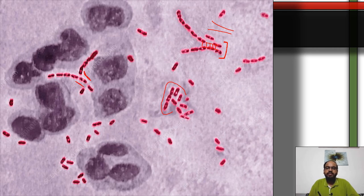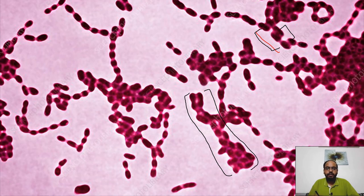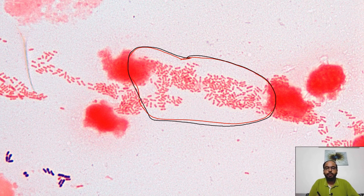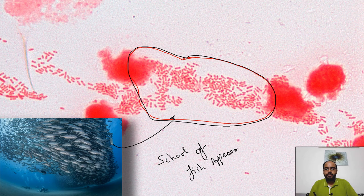The school of fish appearance refers to a large elliptical cluster or group of Haemophilus ducreyi arranged together — like a group of fish swimming together. This can be seen on gram stain and on culture plates, where they may also appear as a cluster resembling a fingerprint. Both railroad track and school of fish appearances are characteristic of chancroid and are frequently tested in MCQs.